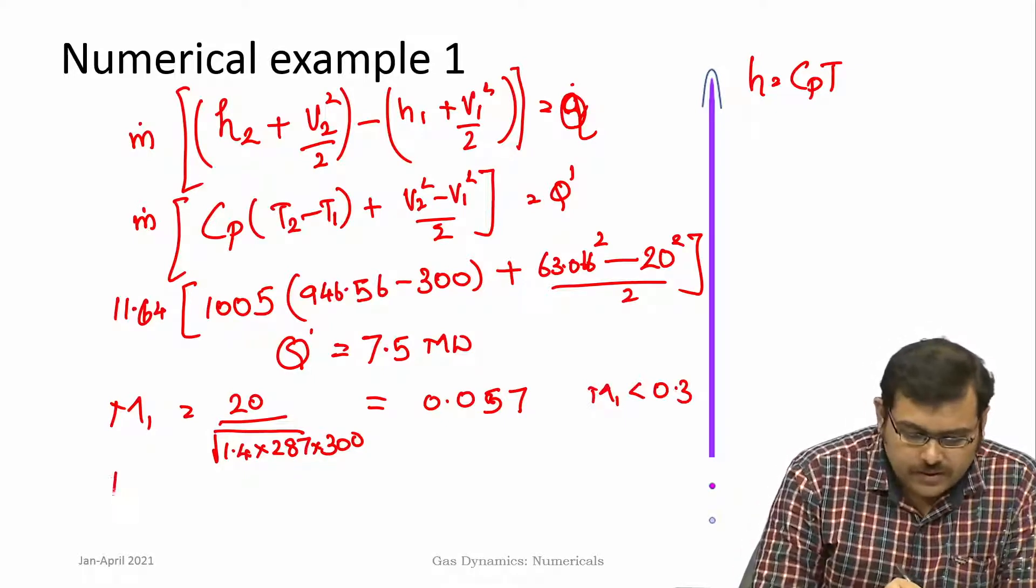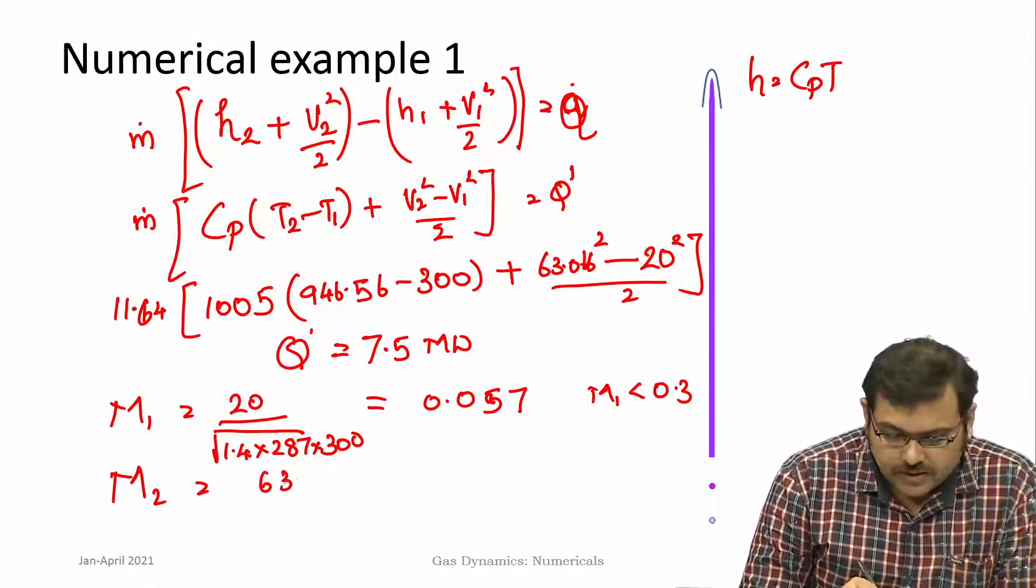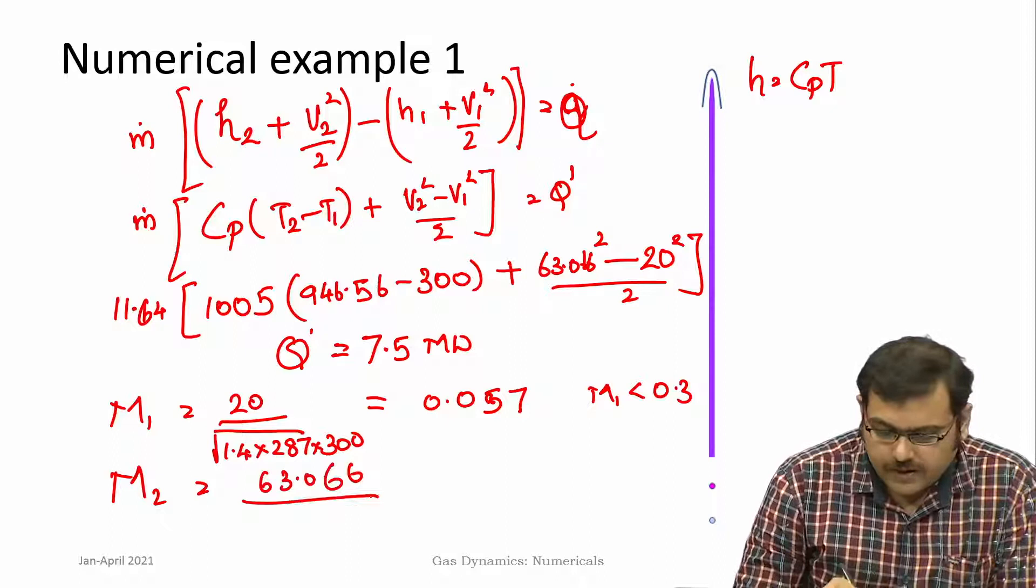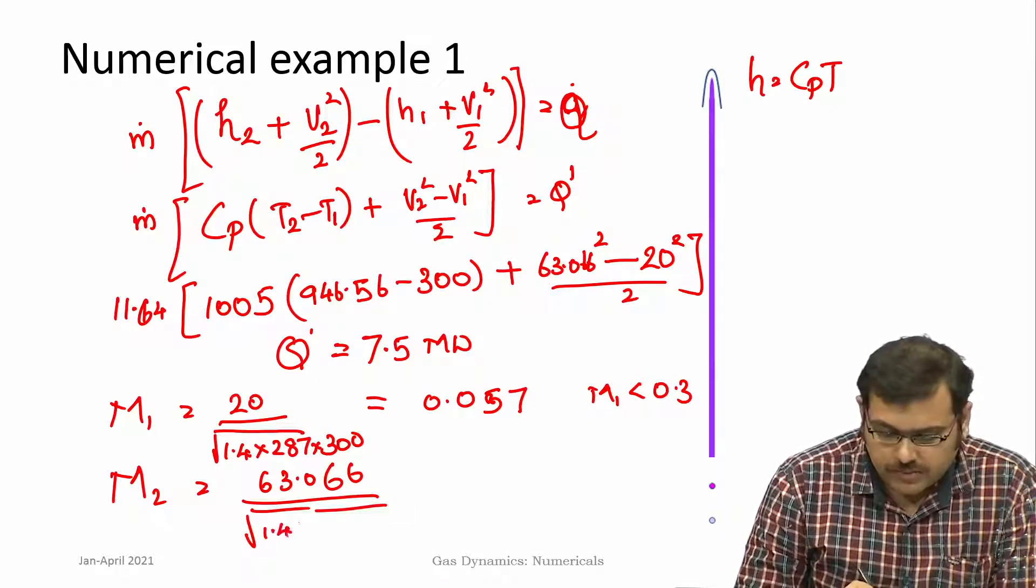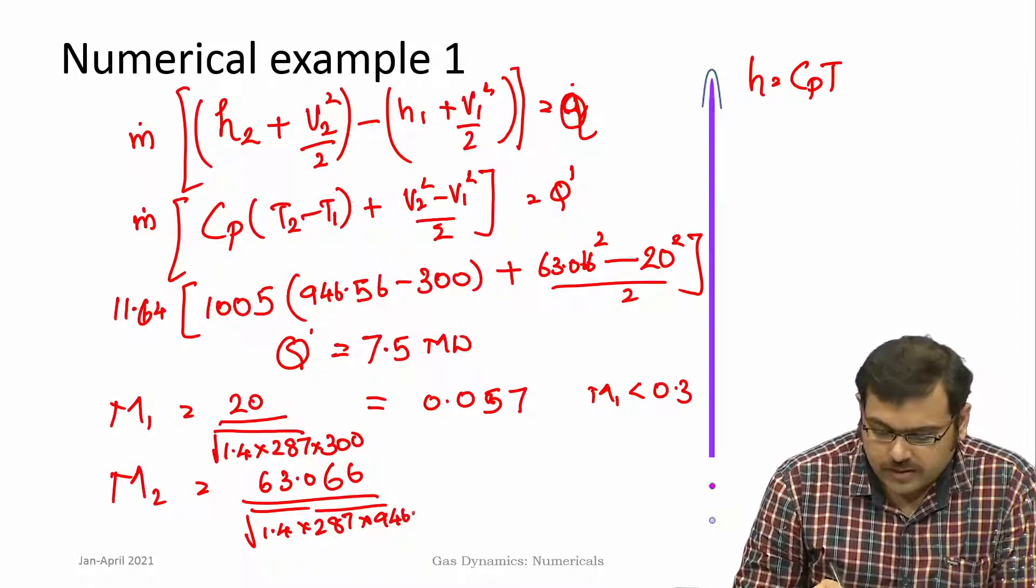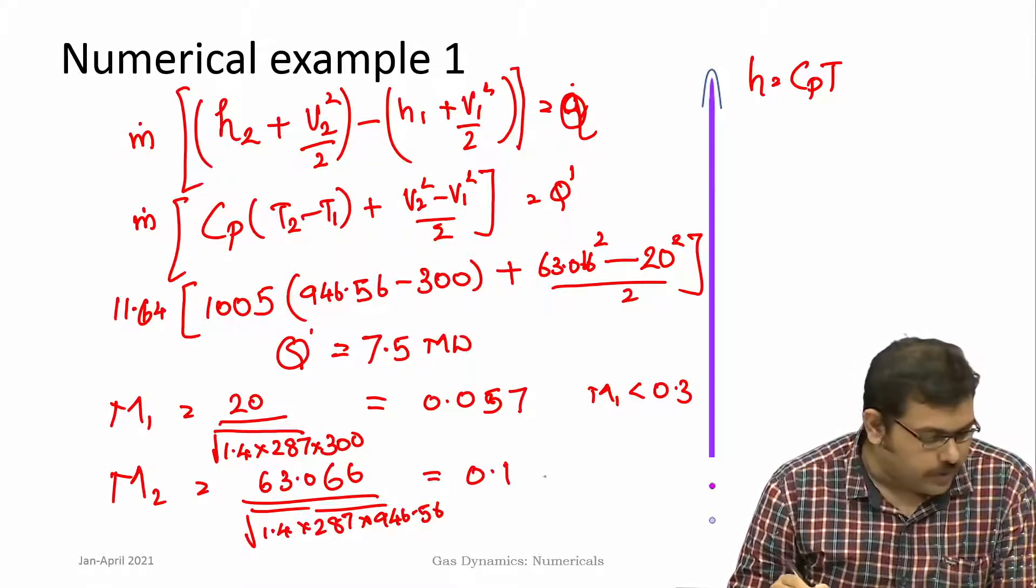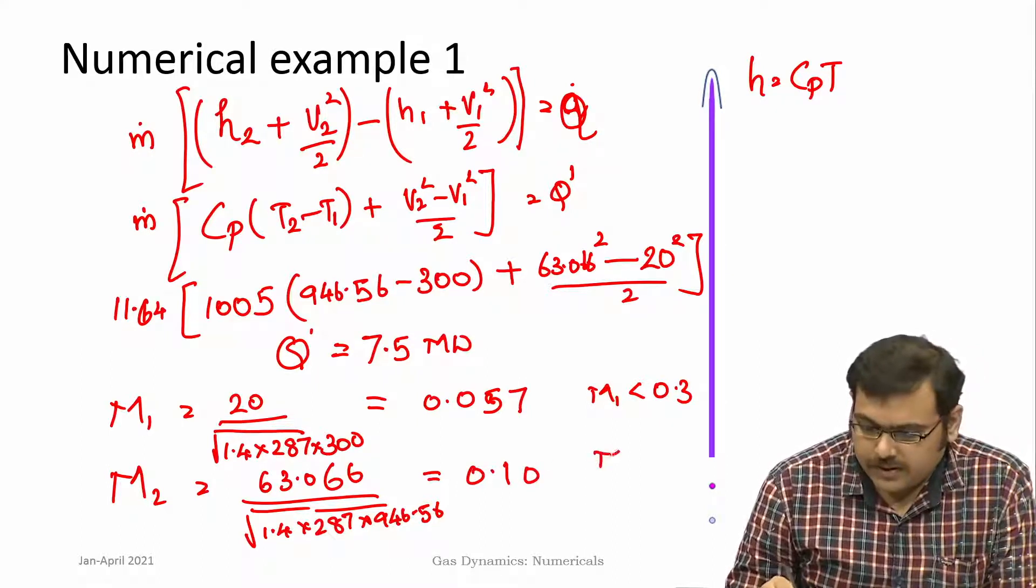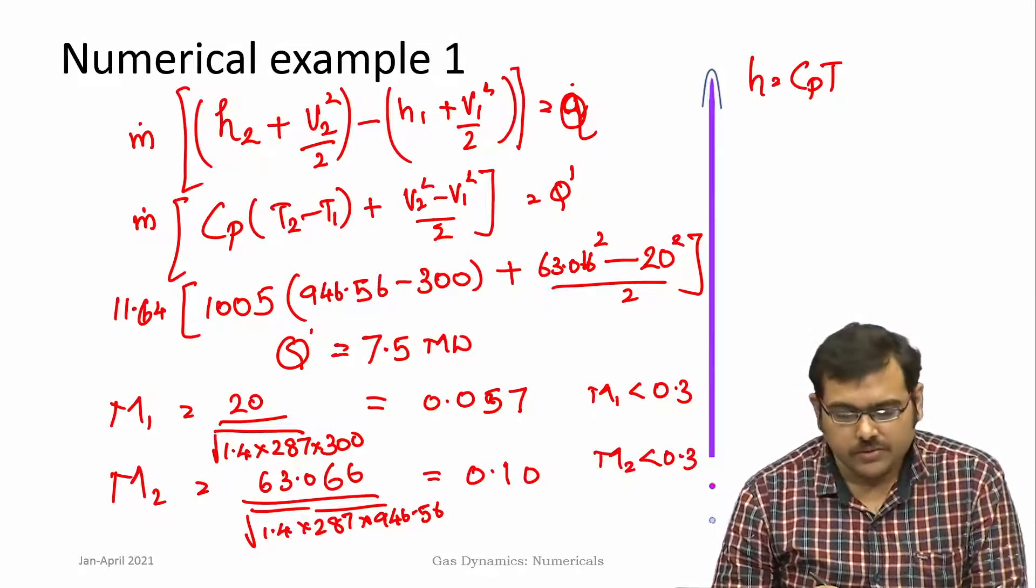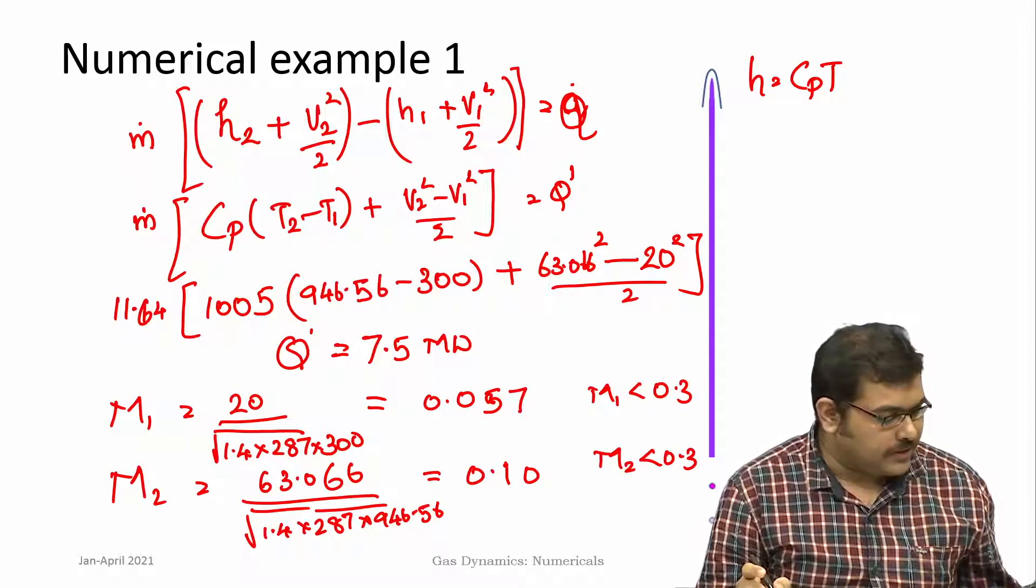Consider Mach 2, M_2 here will be 63.066 divided by the same, but now the temperature is different. Mach number is a local quantity, so it has to be evaluated at those sections. Here you can find the Mach number is close to 0.1. Even this Mach number is less than 0.3, so both these flows at section 1 and section 2 are incompressible. This is not a constant density flow.